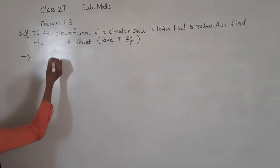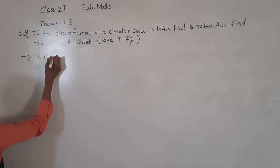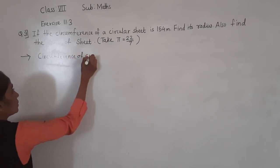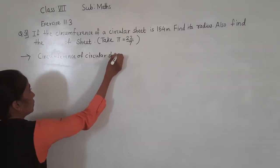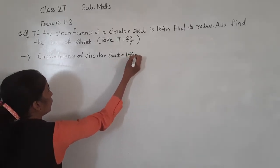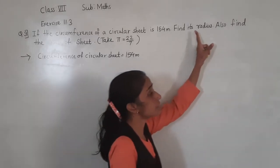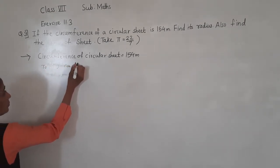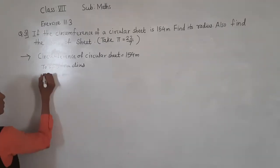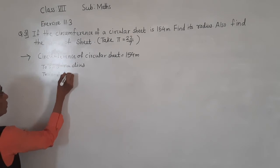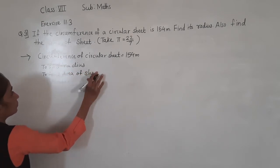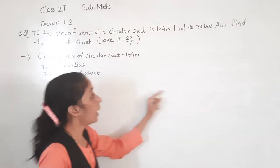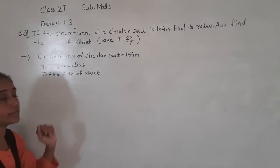Now, what is given? Circumference of the circular sheet is given — 154 metres. And what is asked to find? Find its radius, and also find the area of the sheet. So these two things we have to find.